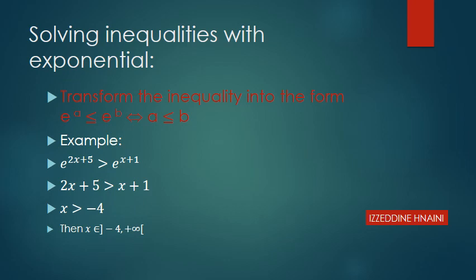Example: e^(2x+5) > e^(x+1). This inequality has the form e^a > e^b, so a > b, that is 2x + 5 > x + 1, which gives x > -4. So the solution of this inequality is from -4 to plus infinity.